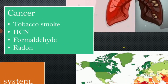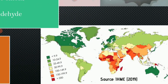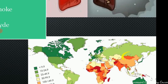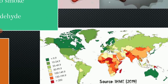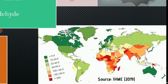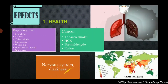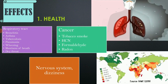A study conducted by the Institute for Health Metrics and Evaluation in Seattle mapped deaths from air pollution per 100,000 inhabitants. The map shows that India is one of the countries where the risk is very high, and that exposure to high air pollution levels is present in several countries as shown. These are the effects that air pollution can have on human health.